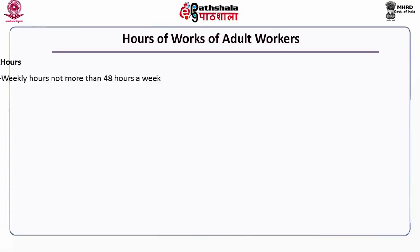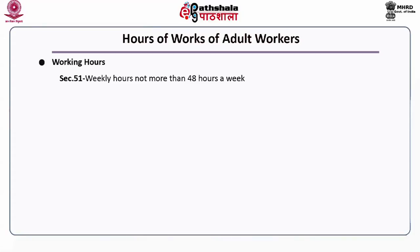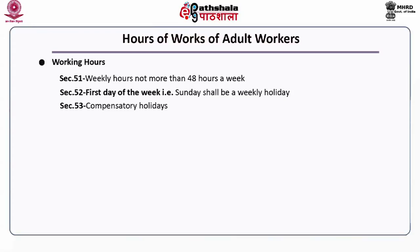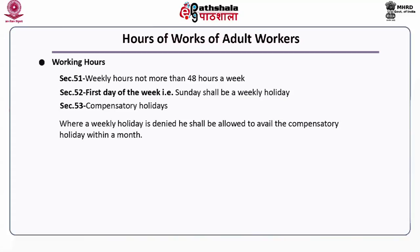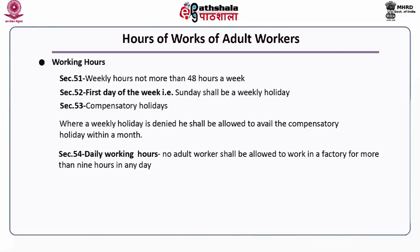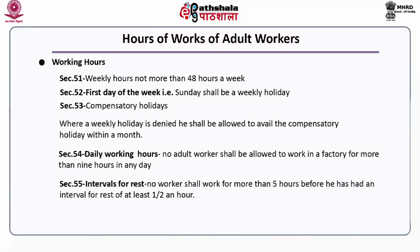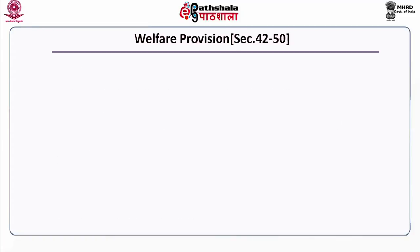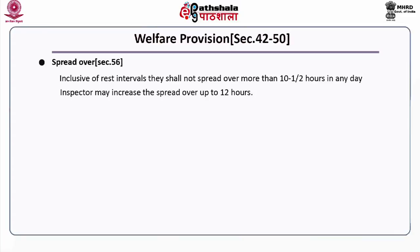Hours of work for adult workers: Section 51 stipulates weekly hours not more than 48 hours a week. Section 52 states that the first day of the week, Sunday, should be a weekly holiday. Section 53 covers compensatory holidays — where a weekly holiday is denied, the worker shall be allowed to avail compensatory holiday within a month. Section 54, daily working hours: no adult worker shall be allowed to work in a factory for more than 9 hours a day. Section 55, interval for rest: no worker shall work for more than 5 hours before having a rest interval of at least half an hour; the inspector may increase this to 6 hours. Under Section 56, spread over: inclusive of rest intervals, work shall not spread over more than 10 and a half hours any day; the inspector may increase the spread over up to 12 hours.